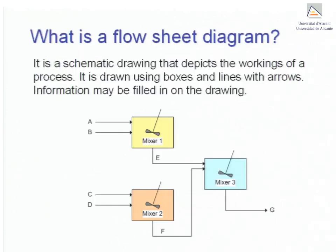This diagram is a schematic representation of what happens in the process and is usually drawn with boxes to represent process units and lines with arrows to represent streams. Any information that is known about the process can then be filled in on the diagram.